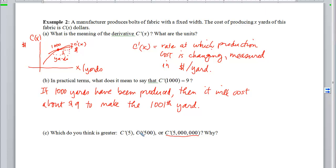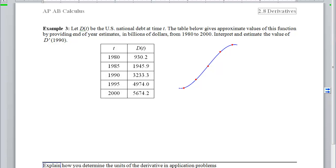The third and final example for this section is, let d of t be the U.S. national debt at time t, and here's our table below that gives the approximate values of this function by providing end-of-year estimates. So I want to interpret and estimate the value of d prime of 1990.